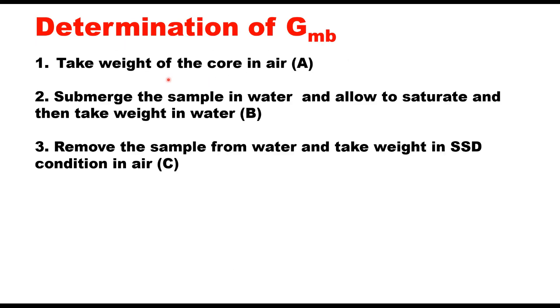For determination of bulk density, this is a three-step process. First you take weight of the core in air, submerge the sample in water and allow to saturate, then take weight of the sample in water. Remove the sample from water and take its weight in saturated surface dry condition in air.